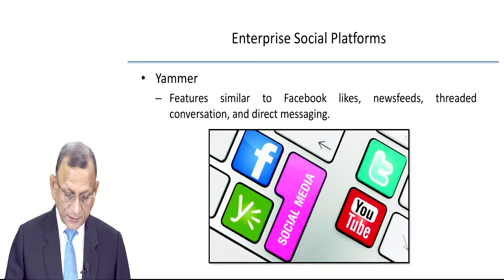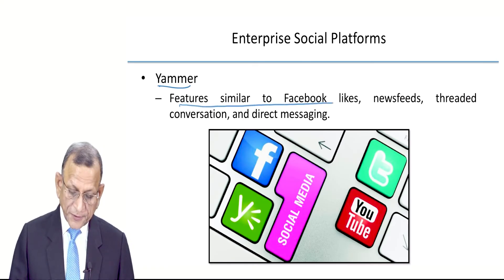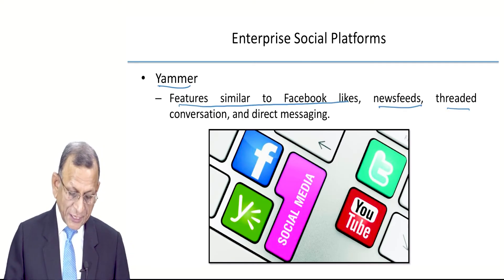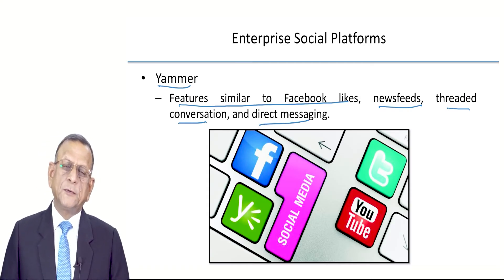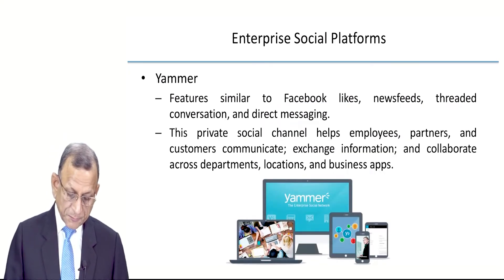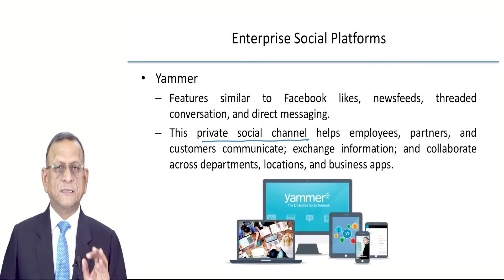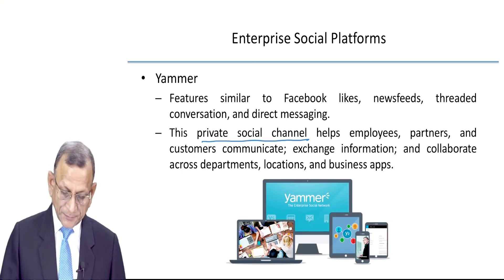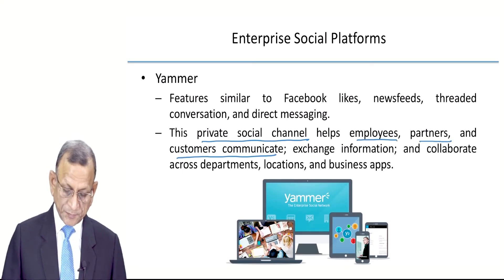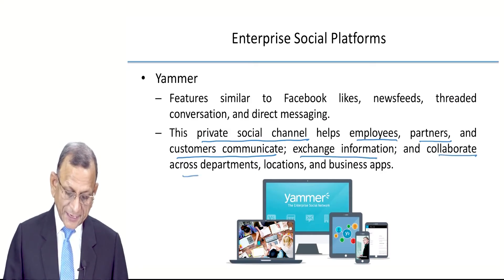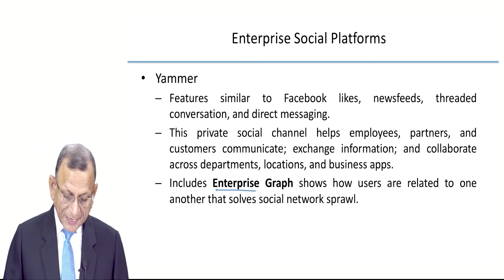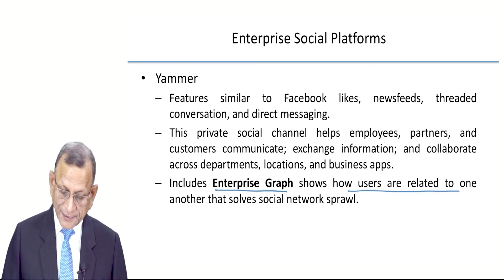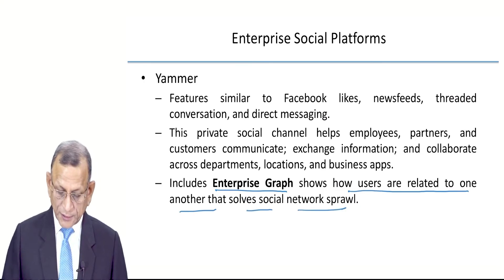The second option is Yammer. Yammer has features similar to Facebook: likes, news feeds and threads, conversation, and direct messaging. Threaded conversations and messaging are there; you can keep uploading whatever you wish. This private social channel helps employees, partners, and customers communicate with each other, exchange information, collaborate across departments, locations, and business applications, and includes an enterprise graph that shows how users are related to one another and solves social network sprawl.